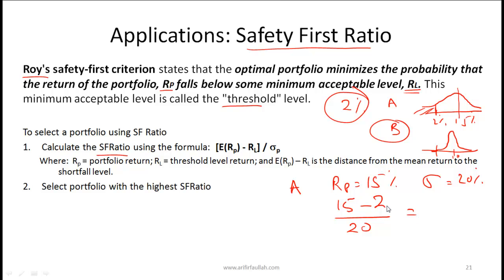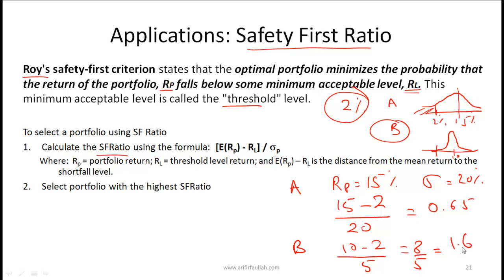That gives 13 divided by 20, equal to 0.65. For portfolio B, with expected return of 10%, threshold of 2%, and standard deviation of 5%, the ratio is 8 divided by 5, which equals 1.6. Portfolio B has a higher safety first ratio and hence is the safer and better portfolio given this criterion.